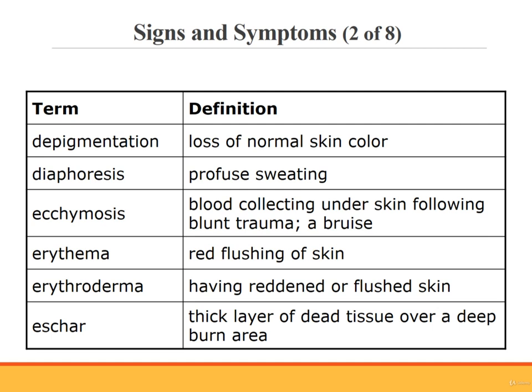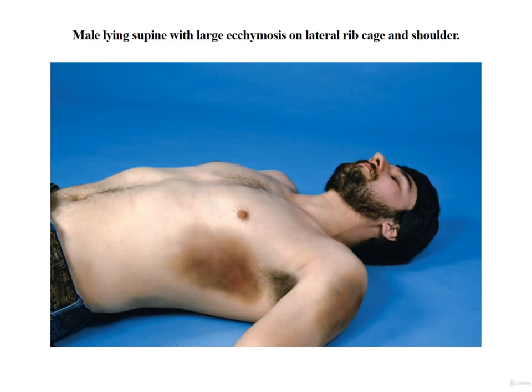Eschar is a thick layer of dead tissue and tissue fluid that develops over a deep burn area or a deep decubitus ulcer. On this slide is a photograph of a male lying supine with a large ecchymosis on his left lateral ribcage and shoulder. You can see that there are multiple colors in the bruise itself. Usually, as a bruise ages, it becomes more yellow. You can bet that this particular ecchymosis hurt a lot.